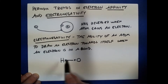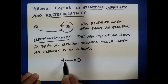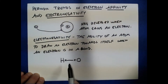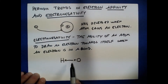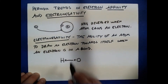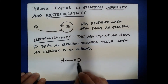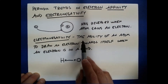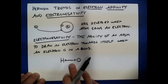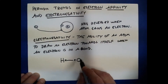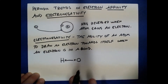Electronegativity describes how these electrons are shared between two atoms. When we have two different atoms, some atoms are better at pulling on the electrons in the bond than others. It turns out that oxygen is a little better at pulling on these two electrons than hydrogen, so these two electrons in this bond spend a little more time around the oxygen than around the hydrogen.